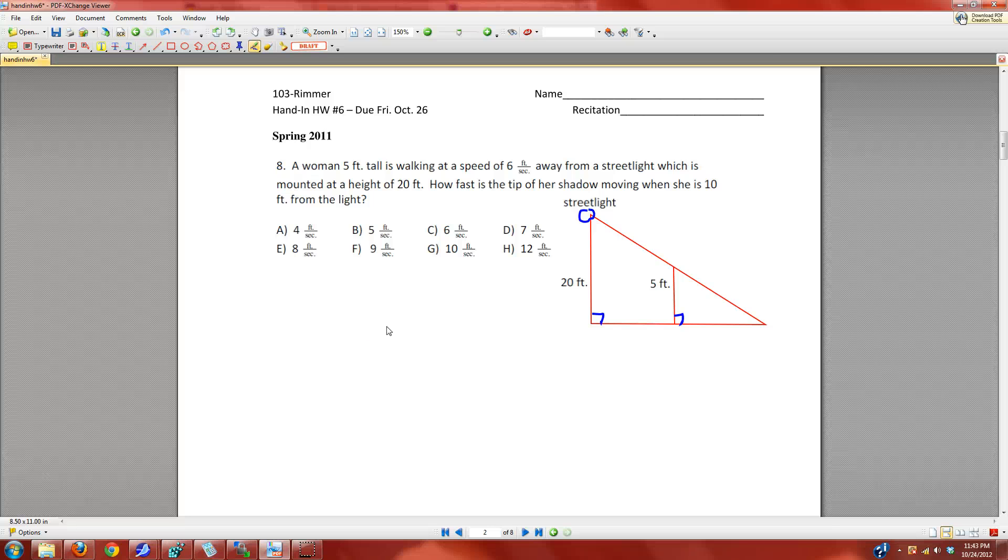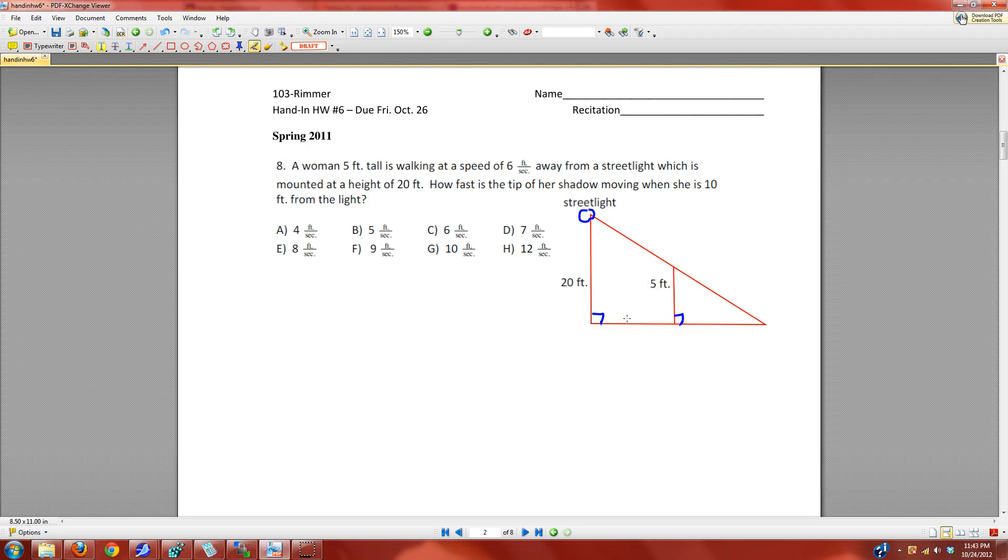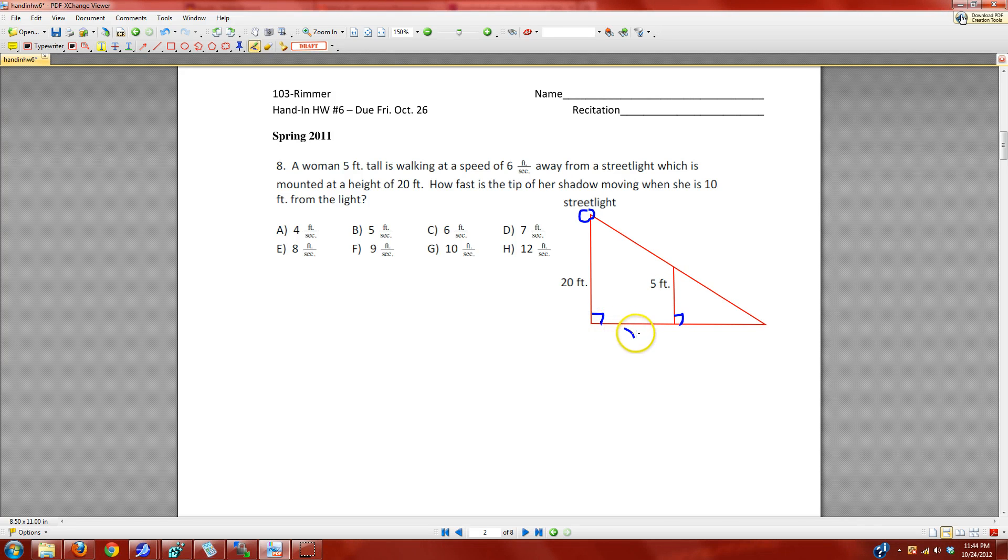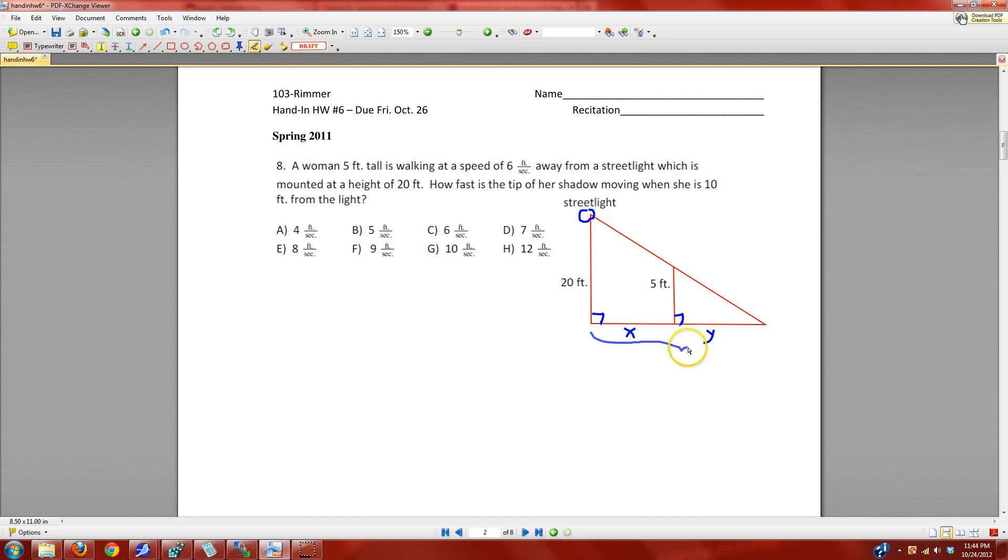A woman five feet tall is walking at a speed of six feet per second away from a street light which is mounted at a height of 20 feet. So you have a street light at a height of 20 feet. The woman is five feet tall. It's not drawn to scale. There is the distance she is away from the pole and then there's the length of her shadow. These two together make up the distance to the tip of the shadow.